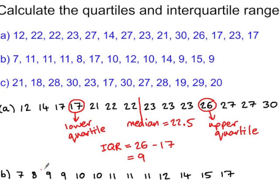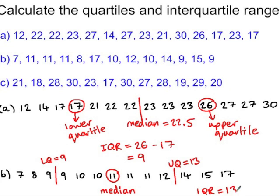In part B there are 13 scores, and again you can see that I've written them in order. So the middle score this time is the 7th value, giving us a median of 11. We have 6 scores below the median, so the lower quartile here is 9, and we have 6 scores above the median, giving us an upper quartile of 13. Our interquartile range is 13 take 9, which is 4.